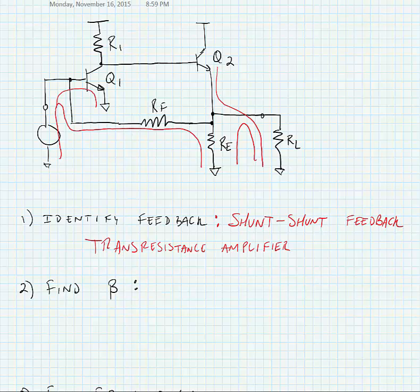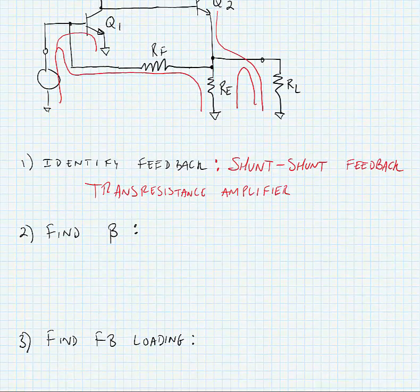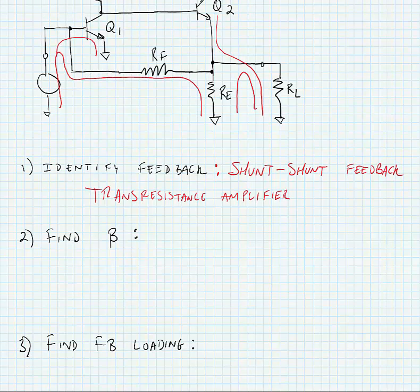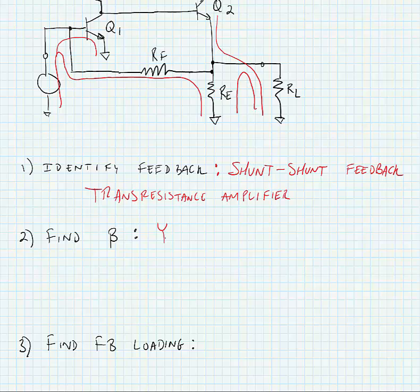So our first step when we start doing feedback analysis is that we need to find the correct parameters in order to find beta and to find the feedback loading effects. So the parameters that we use for trans-resistance amplifiers are Y parameters.